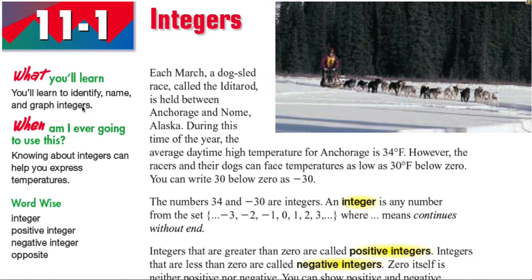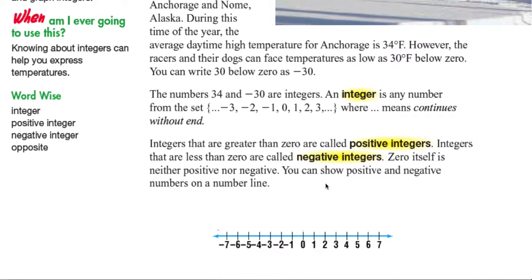Each March a dog sled race called the Iditarod is held between Anchorage and Nome, Alaska. During this time of year, the average daytime high temperature for Anchorage is 34 degrees Fahrenheit. However, the racers and their dogs can face temperatures as low as 30 degrees below zero. You can write 30 degrees below zero as negative 30.